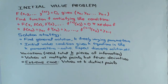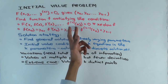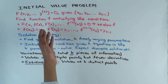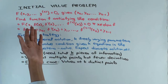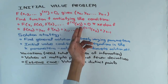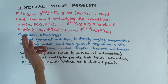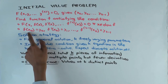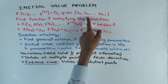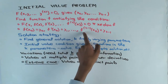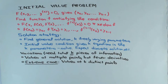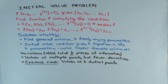The solution to the initial value problem is a solution — a functional solution, or you may get a relational solution instead — but basically it's a solution to the differential equation which additionally satisfies the condition that the value is correct and all the derivatives match the specifications. So x₀, y₀ and all the derivative values are actually numbers.